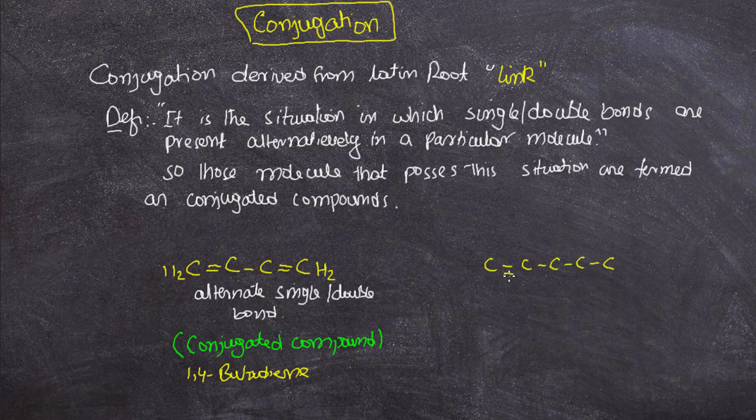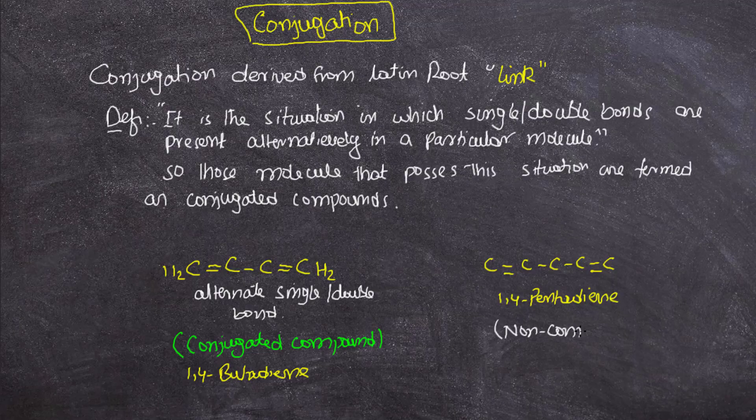In this example, 1,4-butadiene is a conjugated compound. Another example is 1,4-pentadiene, which is a non-conjugated compound.